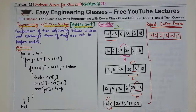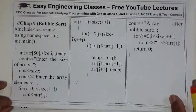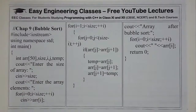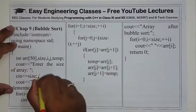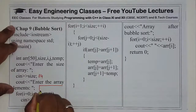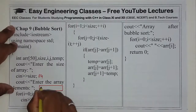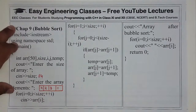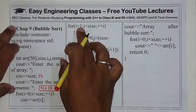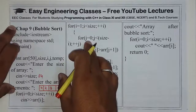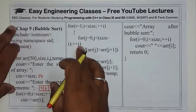The program of bubble sort in C++ goes like this. The size of the array we are taking is 4. Array elements are simply: 4, 2, 3, 1. Then we have i starting from 1, i less than size, i++. And j starting from 0, j less than size minus 1, j++.